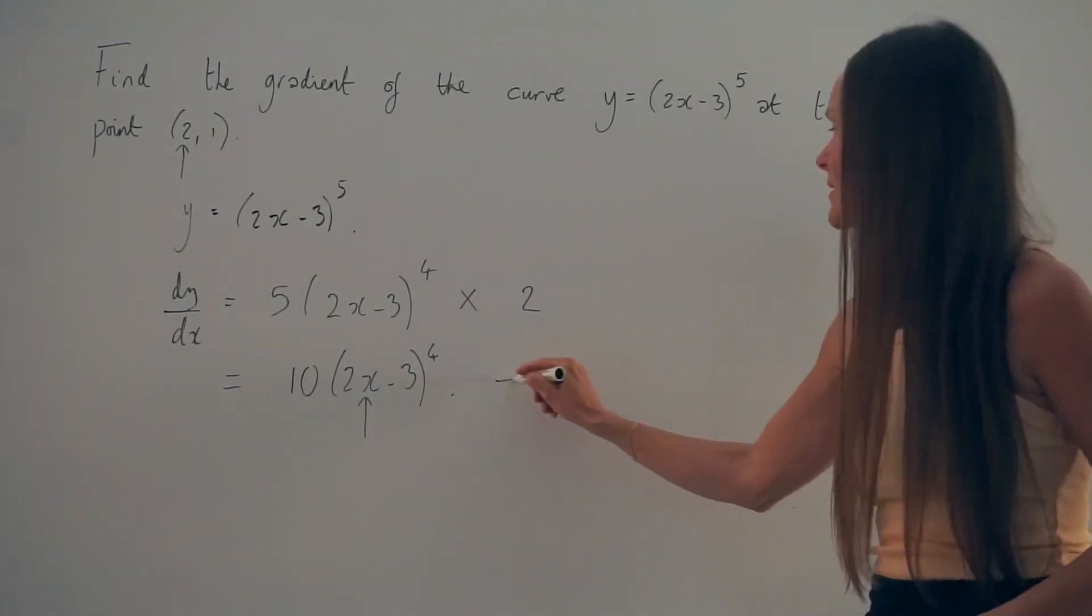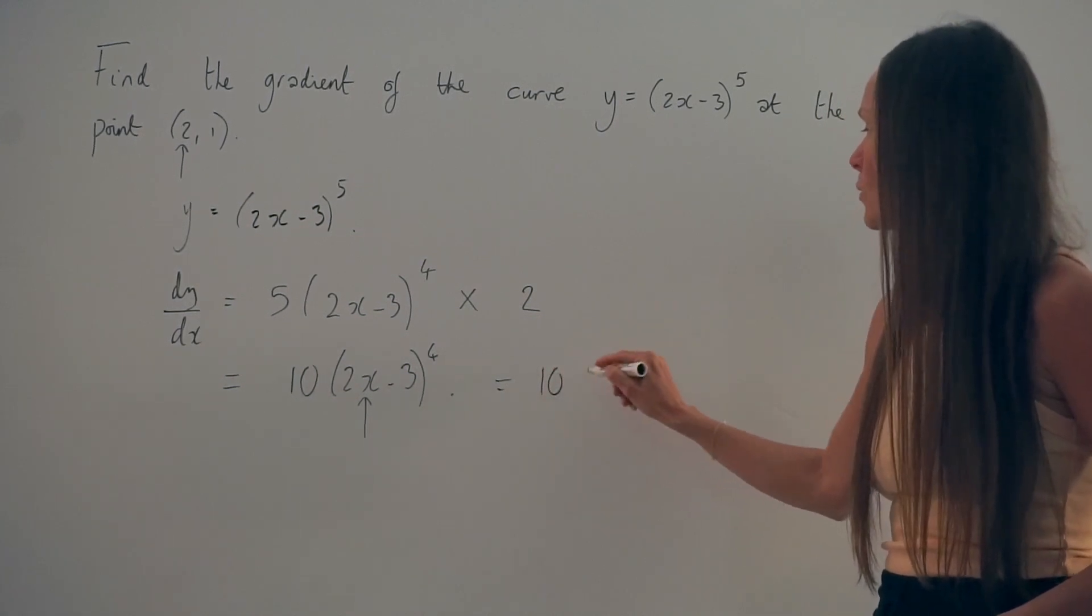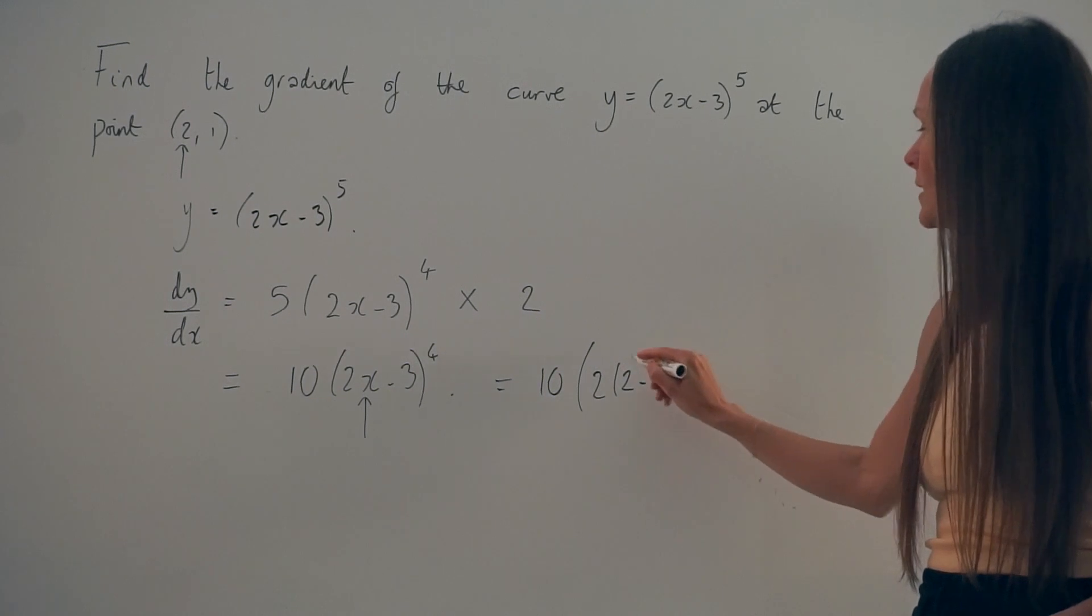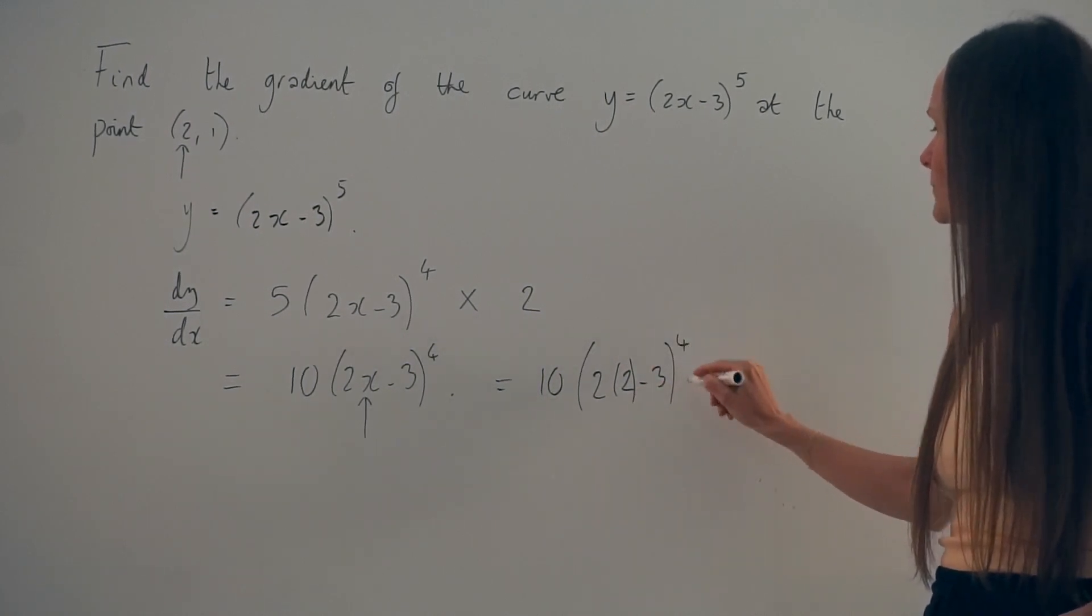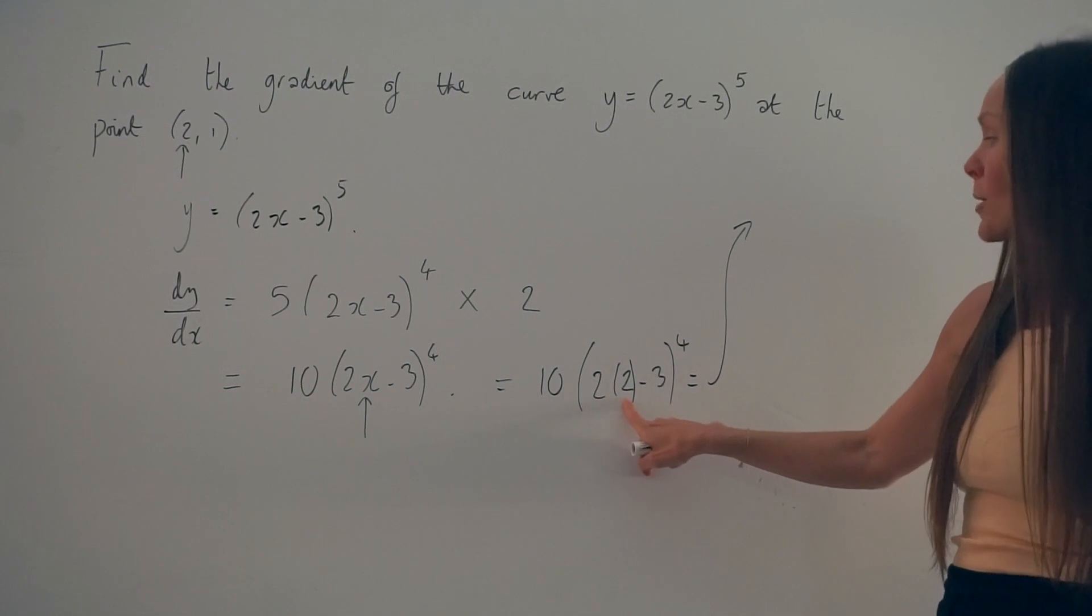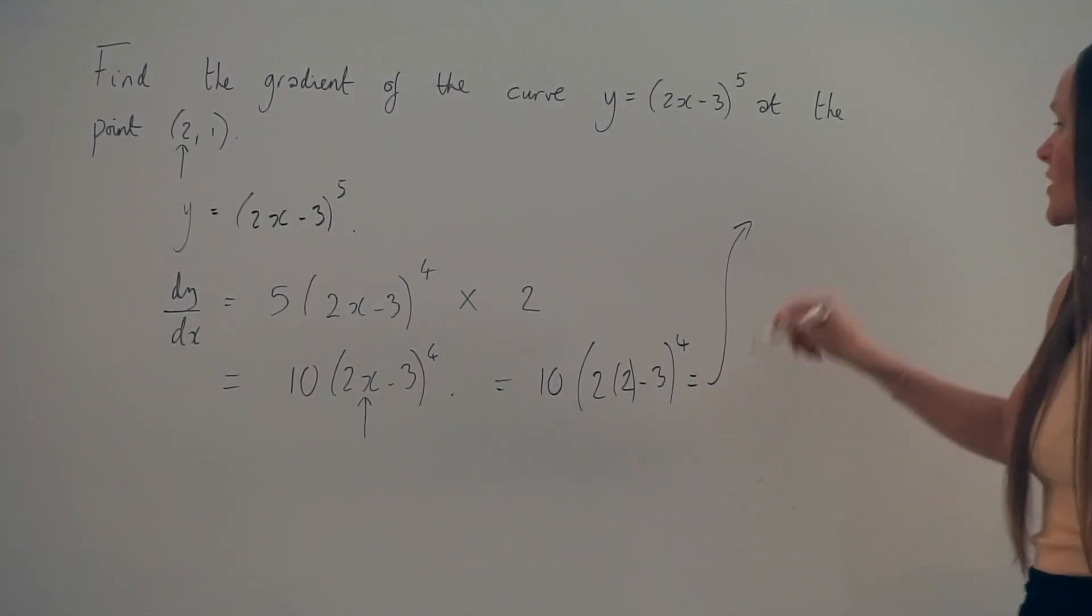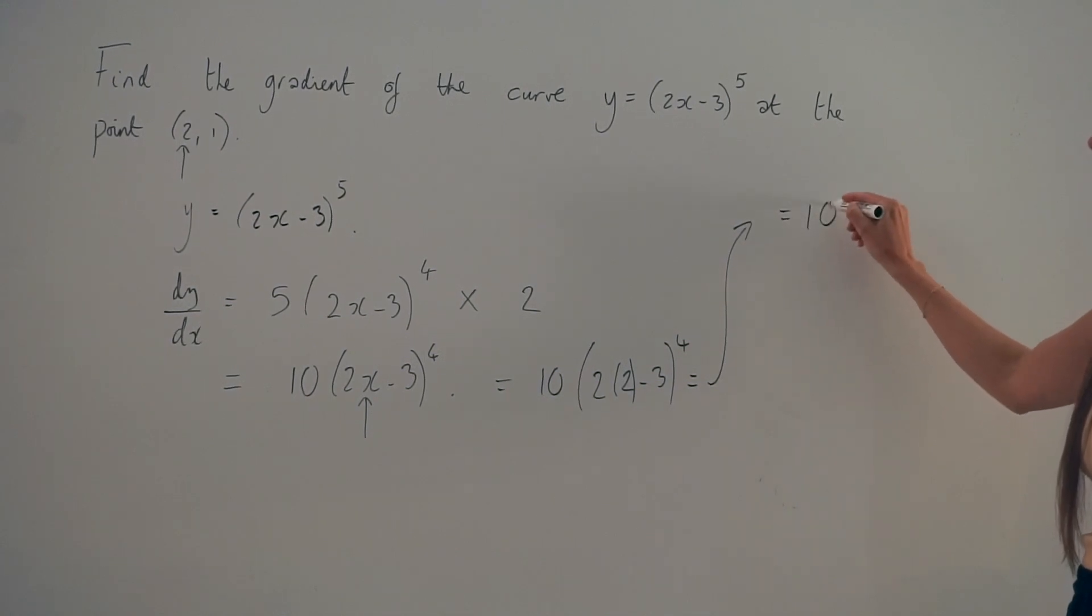So when we do that, we get 10 multiplied by (2 lots of 2 minus 3), raised to the power of 4. And 2 multiplied by 2 is 4, 4 take away 3 is 1, so we're left with 10 multiplied by 1 to the power of 4.